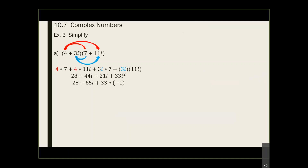This is why I mentioned the power of i earlier: every time you see an i squared, you have to convert it to negative 1. So we see an i squared here — we convert that i squared to negative 1. What is 33 times negative 1? That gives me negative 33. Now we have another like term: 28 and negative 33. Combining: 28 minus 33 gives negative 5. So the answer is negative 5 plus 65i. Always put the real number in front and the imaginary number — the i — in the back.